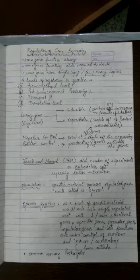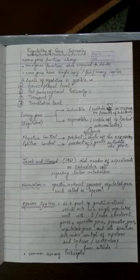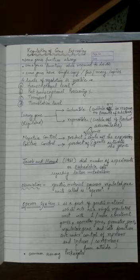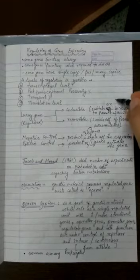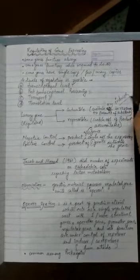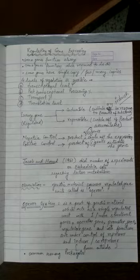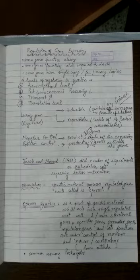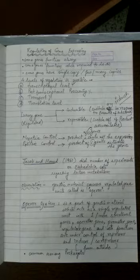Luxury genes or regulated genes or non-constitutive genes are of two types: inducible and repressible. Inducible genes are always switched off and will be switched on if there is the presence of a substrate called inducer. As long as inducer is missing, these genes will not function. Repressible genes are always working and will switch off if the product accumulates. The accumulation of product will become a repressor for them.